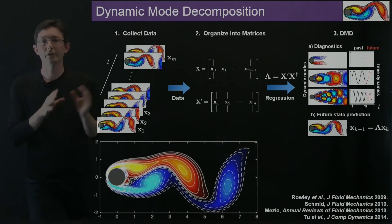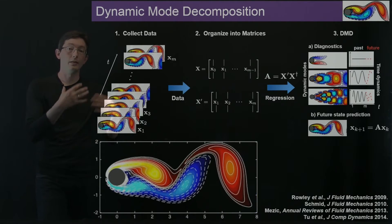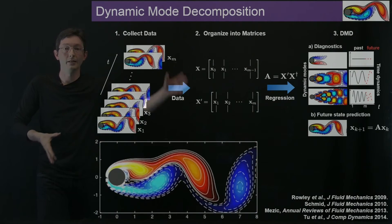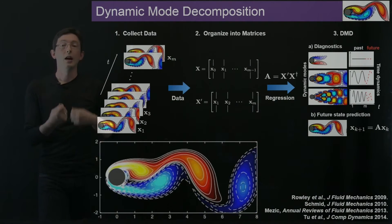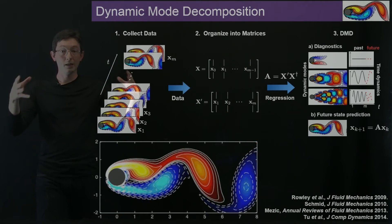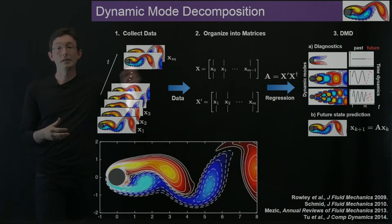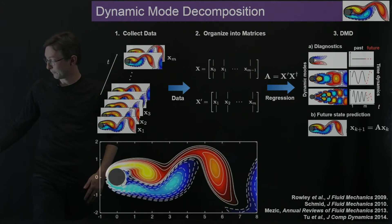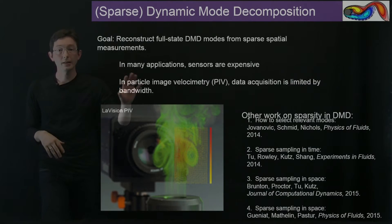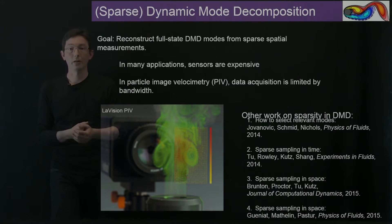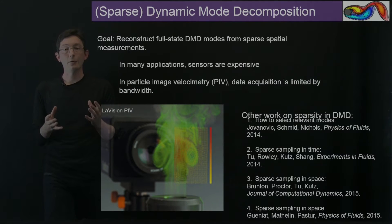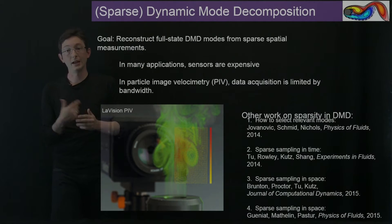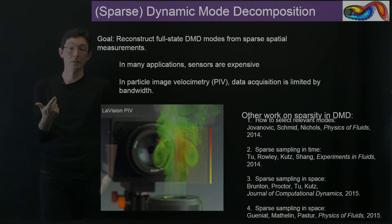As you can tell from this overview, there's a lot of data acquisition required. I have to collect a large amount of data to fill X and X-prime, and I'm doing linear algebra on these big matrices. This might be expensive to both collect and process. What I'm going to tell you in this paper on compressed sensing dynamic mode decomposition is how we can leverage sparsity and compressed sensing ideas to speed up both the data acquisition and processing of DMD.